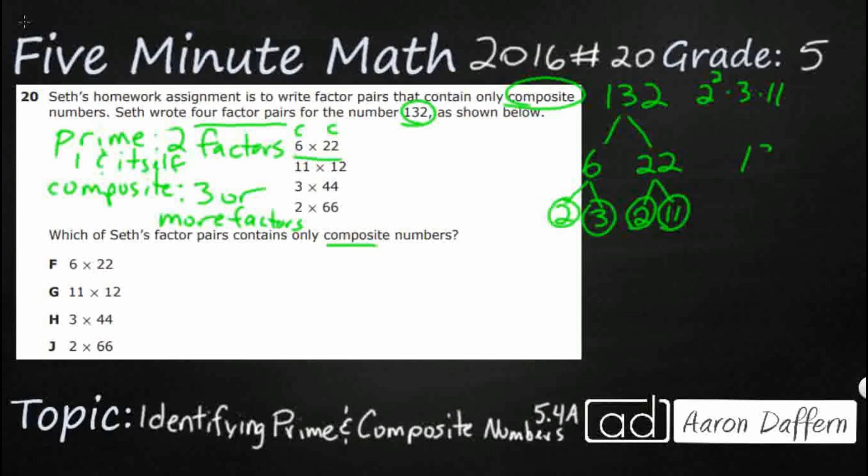I'm going to take my 132. I'm going to start with 11 and 12. 11 and 12. Oh look, 11 is prime. So that's going to be a problem right there. 11 is prime because you can only get to 11 by 1 times 11, not 12.